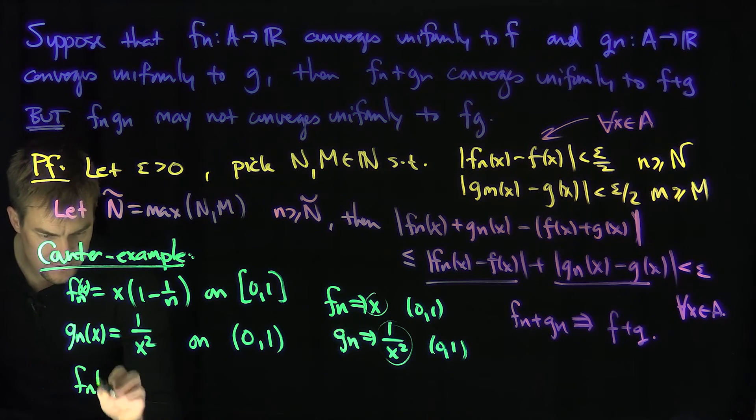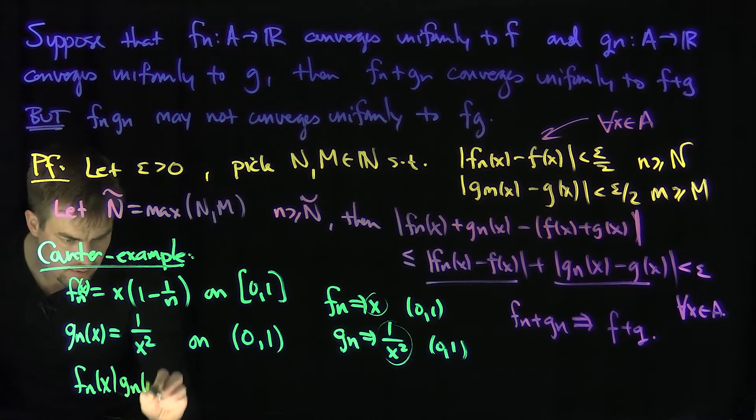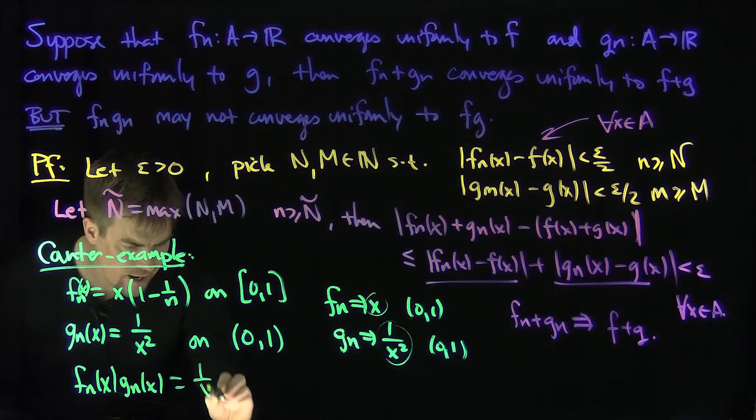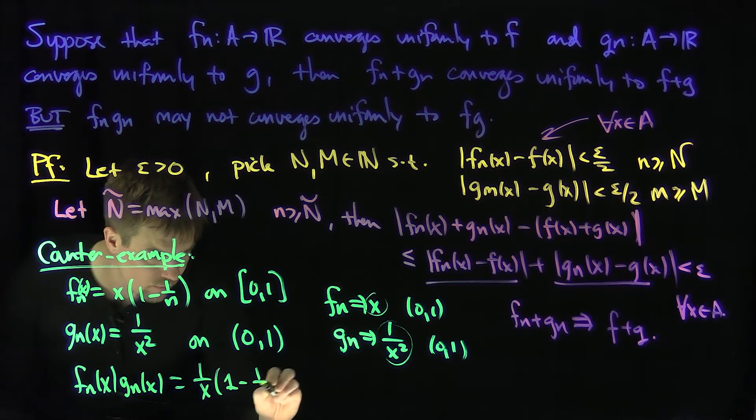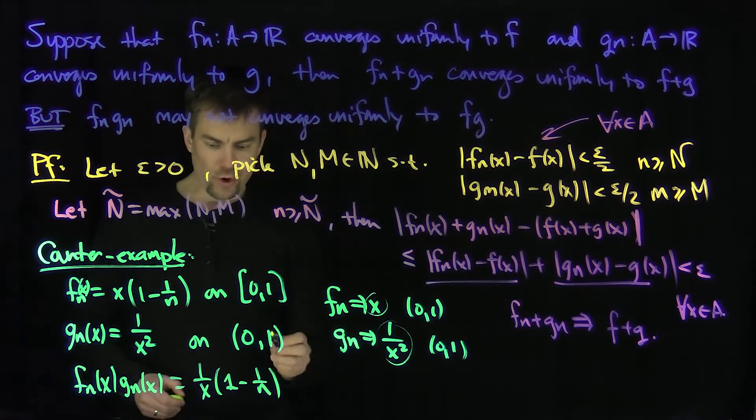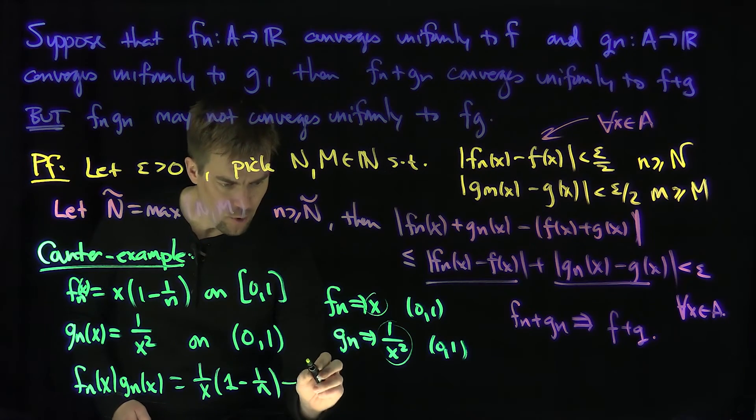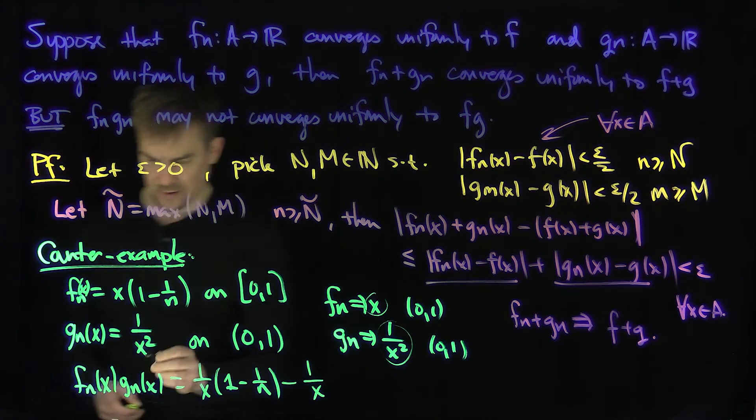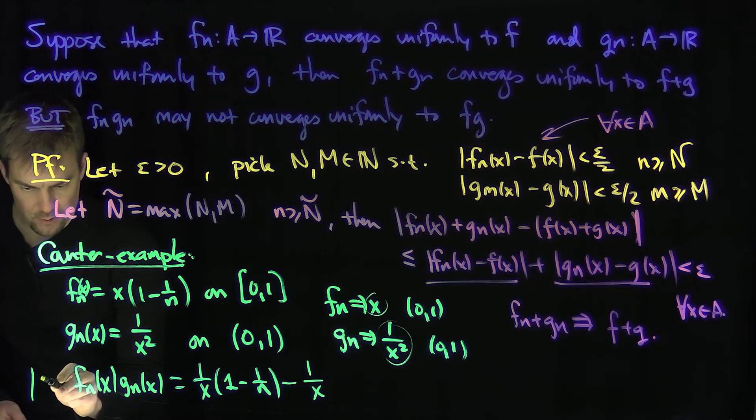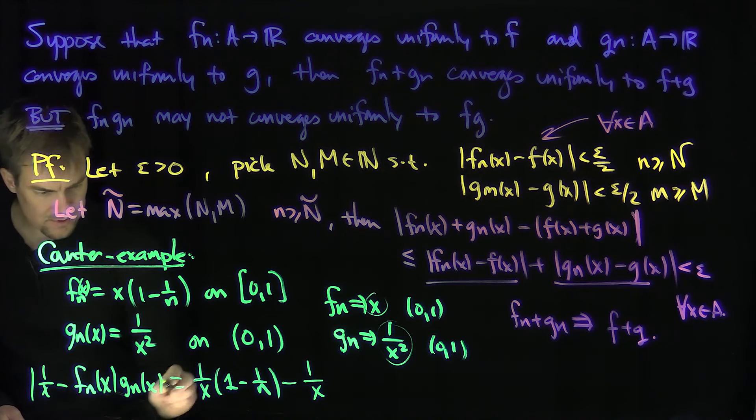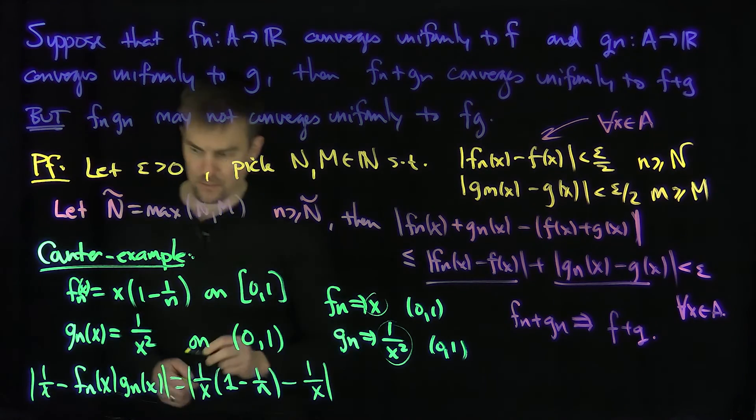Fn(x) times Gn(x) is 1 over x times (1 - 1/N). I'm going to subtract off 1 over x from this, so if I take the absolute value |1/x - Fn(x)Gn(x)|.